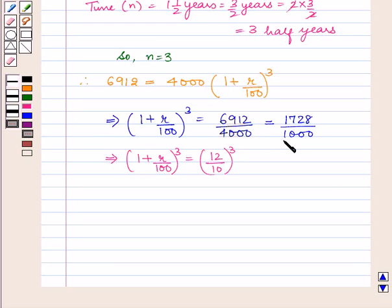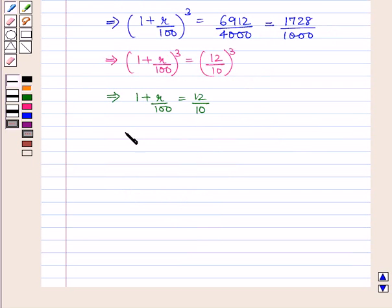So on taking cube roots of both sides, 1 plus R upon 100 equals 12 upon 10, which implies R upon 100 equals 12 upon 10 minus 1, which is equal to 12 minus 10 upon 10, that is 2 by 10.